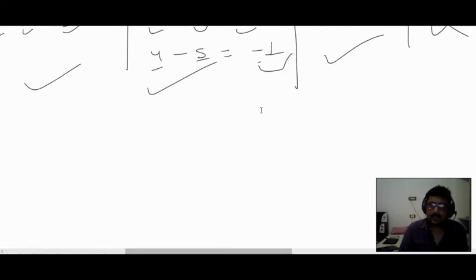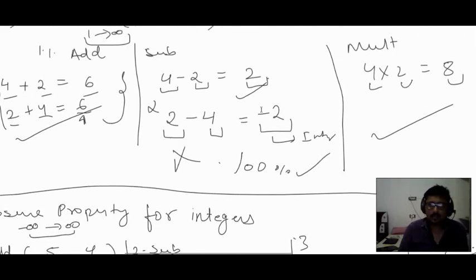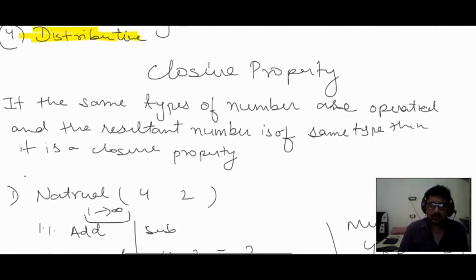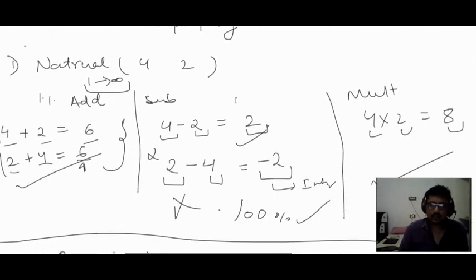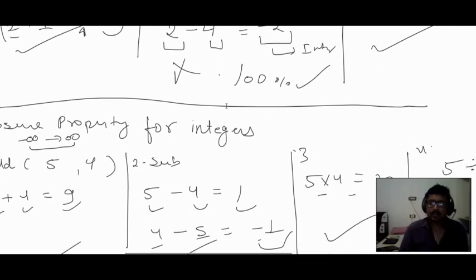So today we covered closure property. Tomorrow we will see commutative property and continue with the remaining properties.